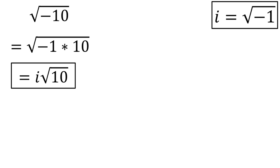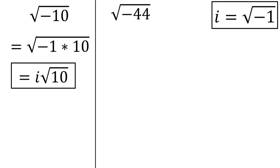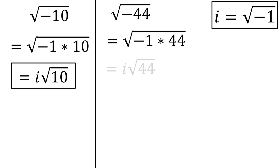Let's try another one. We have the square root of negative 44. This can be rewritten as the square root of negative 1 times 44. The negative 1 can be taken out as i, leaving us with i times the square root of 44.